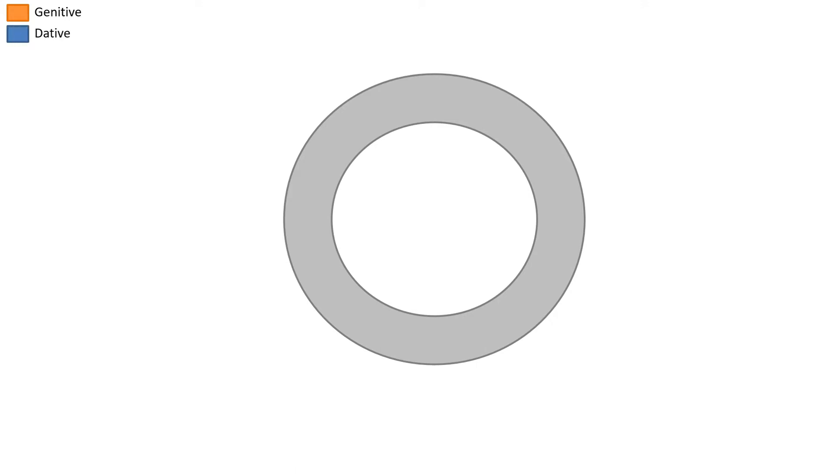Prepositions. I'm going to use orange for the genitive case, blue for the dative case, and green for the accusative case. Let's get started.